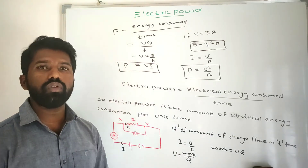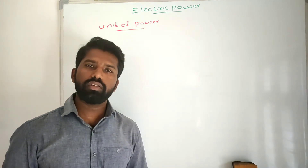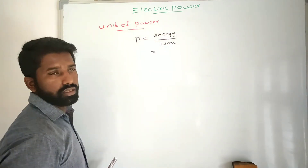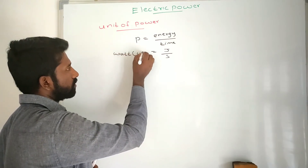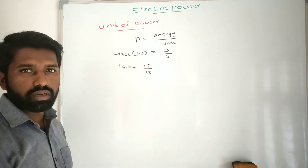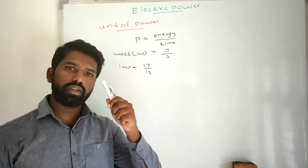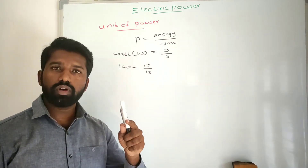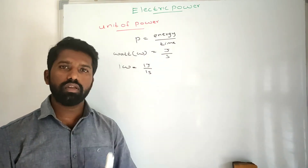Now I am going to discuss the unit of electric power. Power is equal to energy divided by time. The SI unit of energy is joule and the SI unit of time is second. So the unit of power is joule per second, which is called the watt, with symbol W. One watt is equal to 1 joule per 1 second. That means if a bulb's power is 30 watt, it consumes 30 joules of energy in 1 second. So if a device's power is more, it consumes more amount of energy per unit time.